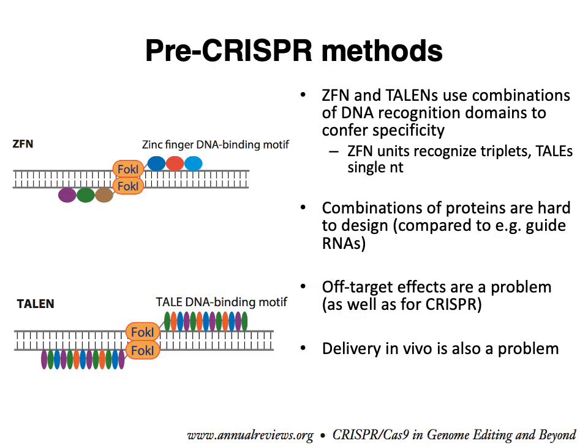The precursor methods to CRISPR-Cas9 were zinc finger and TALEN-based editing systems. These systems use protein-based DNA recognition domains to confer sequence specificity. The idea is that you'd have a pair of FokI domains tethered to DNA binding protein units. Zinc finger-based approaches use combinations of domains where each individual domain recognizes a triplet of nucleotides, whereas for TALENs, the recognition domains each recognize only single nucleotides.